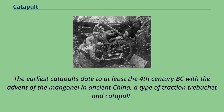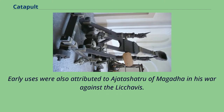The earliest catapults date to at least the 4th century BC with the advent of the mangonel in ancient China, a type of traction trebuchet and catapult. Early uses were also attributed to Ajatashatru of Magadha in his war against the Licchavs.